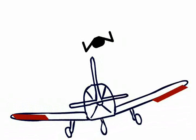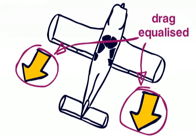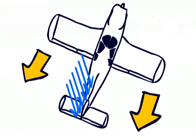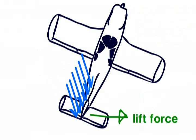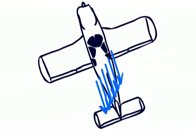Once you have your desired bank angle and you return the ailerons to the neutral position, the drag on both of the wings will equalize again. Airflow coming from the left due to the turn then causes a lift force at the tail, yawing the aircraft to the left, and the aircraft will now be facing in the direction of the turn.